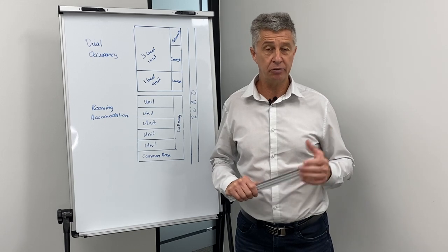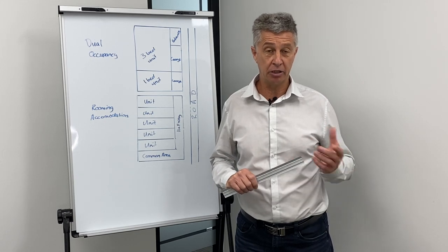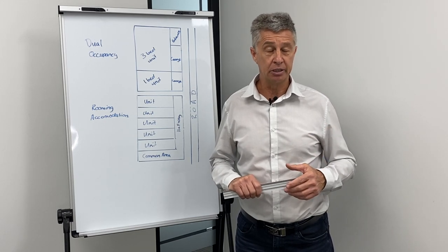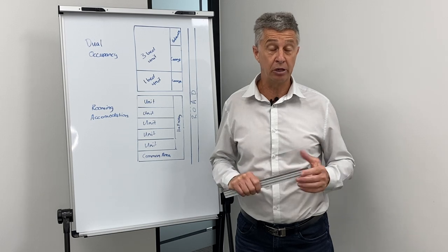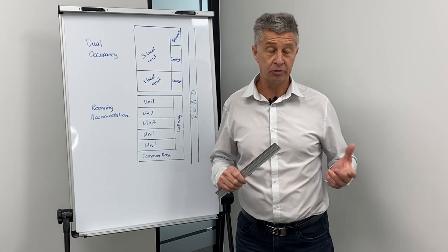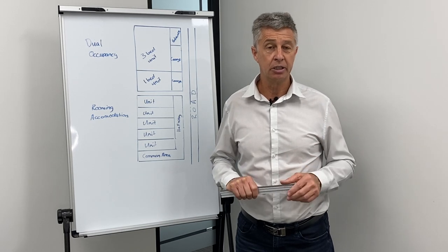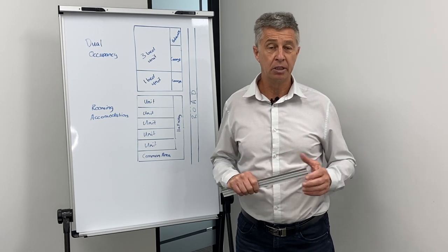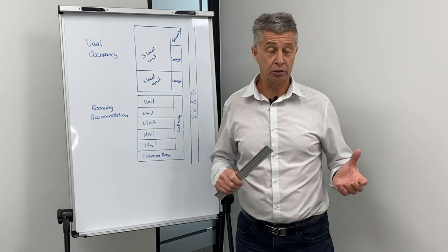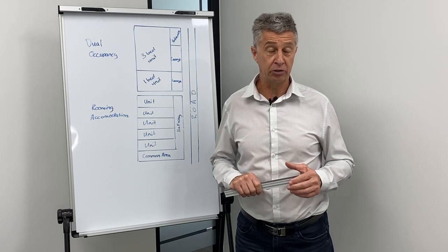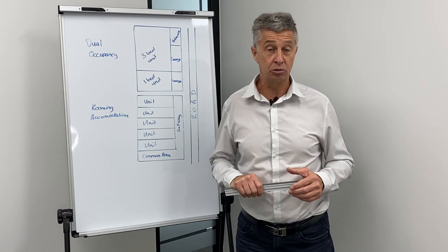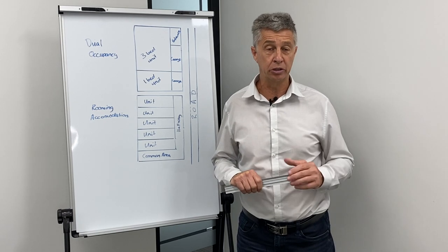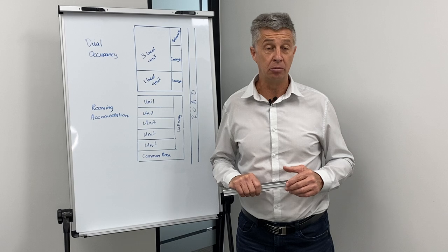The average yield on an average house in the southeast Queensland property market is around about 4% for an average house in the average suburb. These types of accommodation can provide 6 to 8% rental yields, which are much stronger than a standard home.